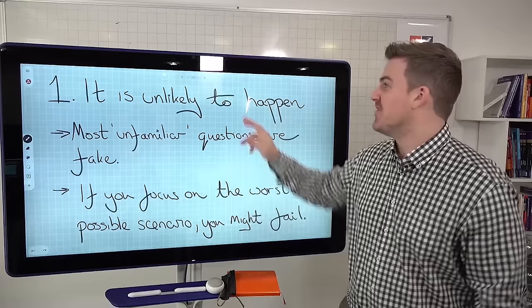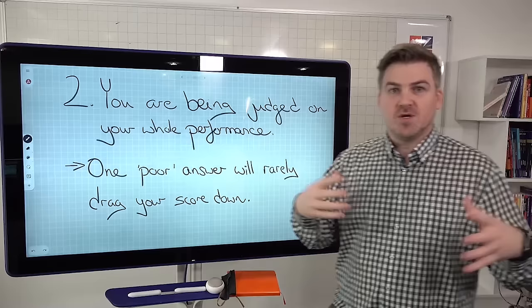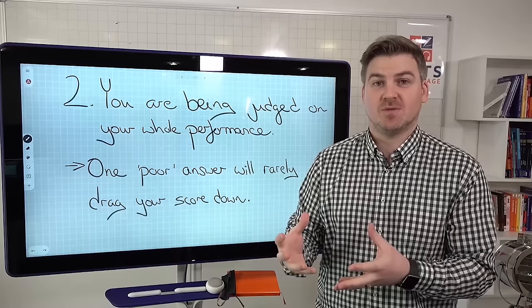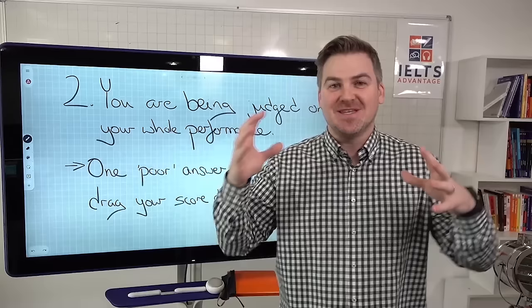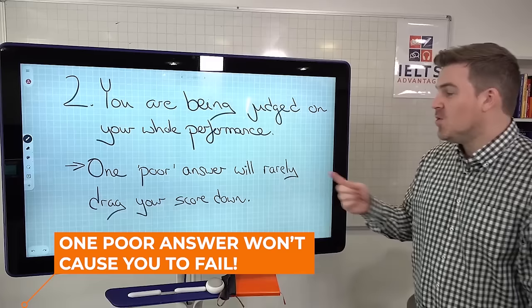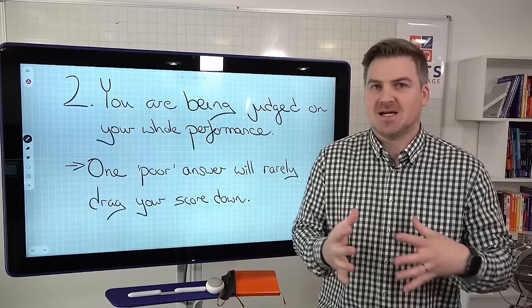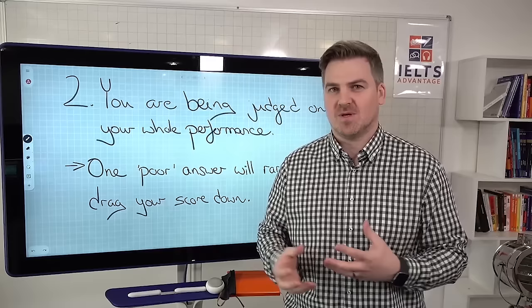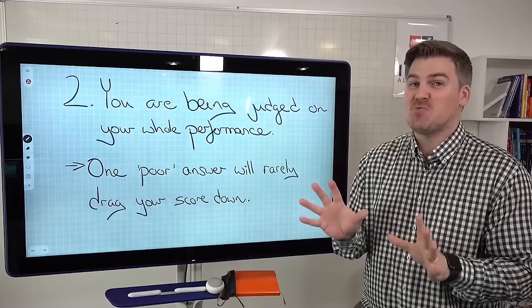Number two, the second reason why you shouldn't worry too much about this is you're being judged on your whole performance. You're going to be asked a bunch of questions in part one, one question in part two, and quite a few questions in part three. The examiner is not giving you a score based on your worst answer. The examiner is giving you a score based on your whole performance, and one poor answer or an answer that you feel uncomfortable giving or don't know enough about that topic, don't worry too much about that because everybody has a poor answer. That's why the examiner bases the score on the whole performance. If you get one question like that, don't worry too much about it.